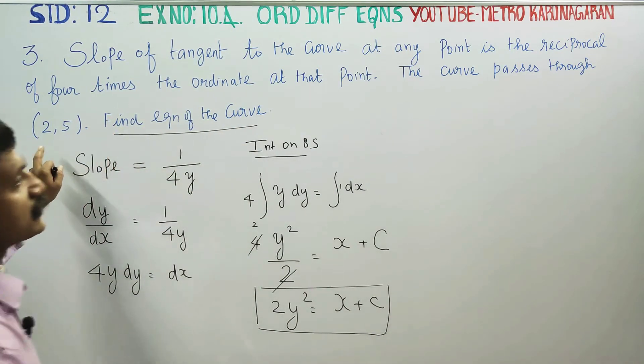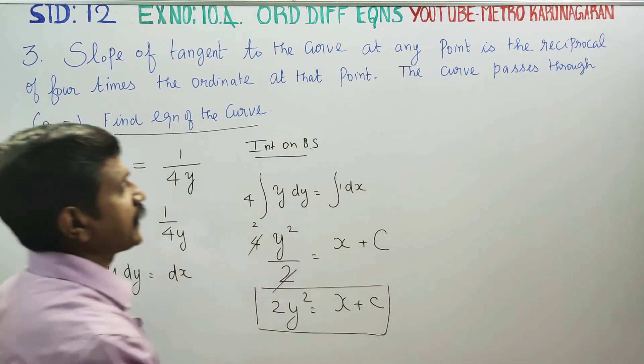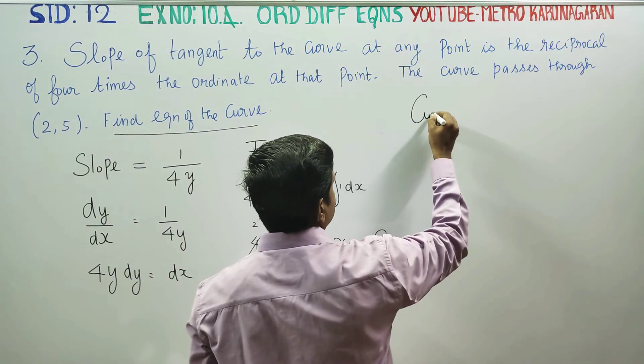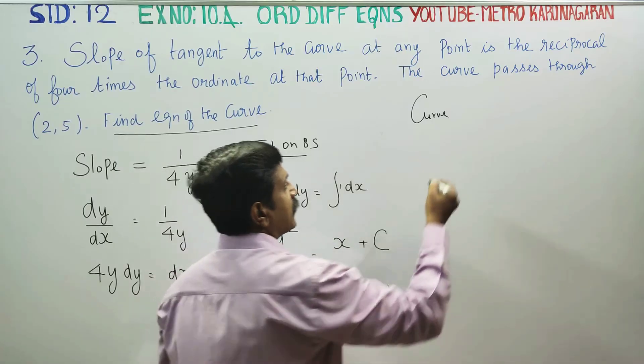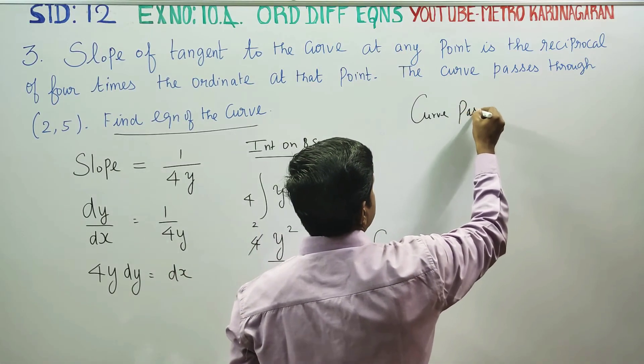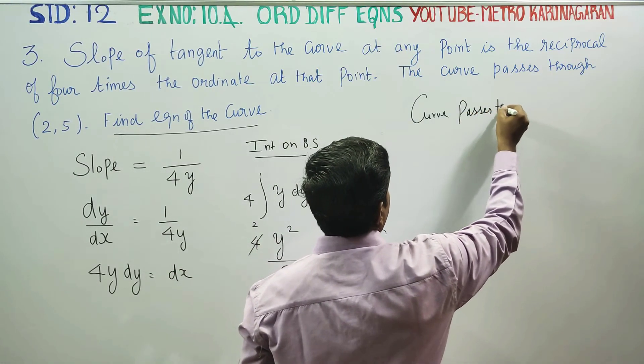It passes through, the curve passes through 2,5. The curve passes through the point (2,5).